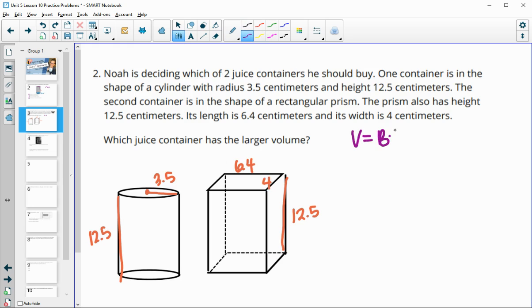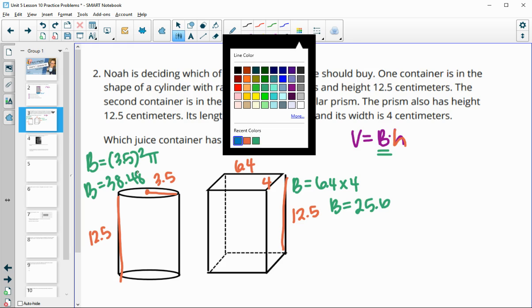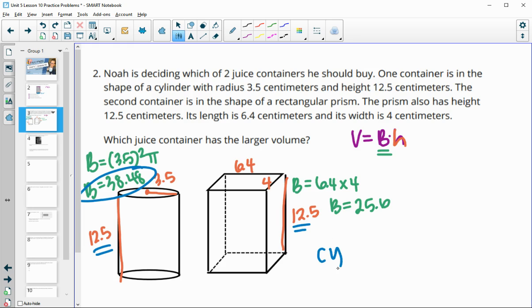Which juice container has a larger volume? Remember, volume equals area of the base times the height. But in this case, the heights are exactly the same. So whichever of these two shapes has a larger base area will have a larger volume and be a better deal as long as they're the same cost. For this cylinder, the area of our base is 3.5 squared times pi, which gives us 38.48 centimeters squared. For this one, 6.4 times 4 gives us a base area of 25.6. So the cylinder is going to have the larger volume because it has the larger base area and they have the exact same height.